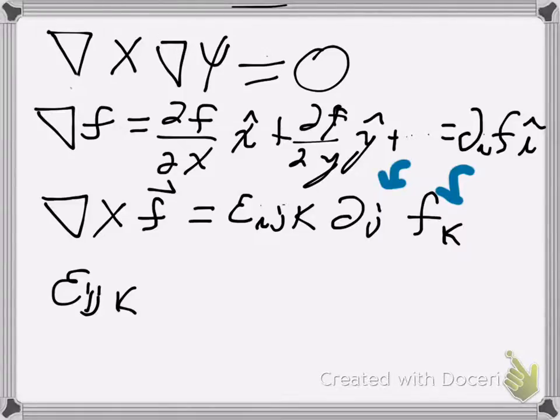I can switch around the values. And if I cycle through them, so if I just move one over, so j, k, i, everything's fine.